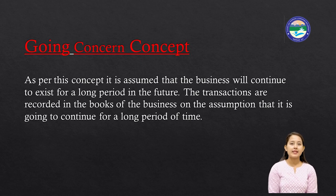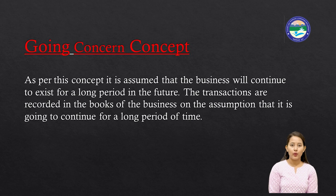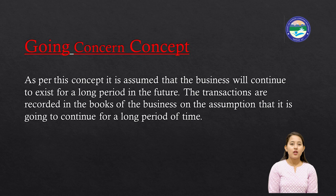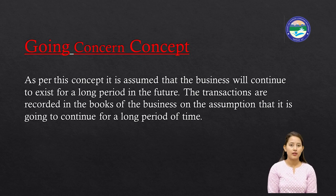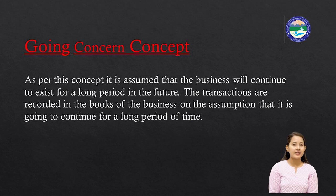The first accounting concept is the going concern concept. As per this concept, it is assumed that the business will continue to exist for a long period in the future, and transactions are recorded on the basis of this assumption. For example, in accounting, assets are classified into long-term and short-term assets, and the same goes for liabilities. This classification is based on the going concern concept.